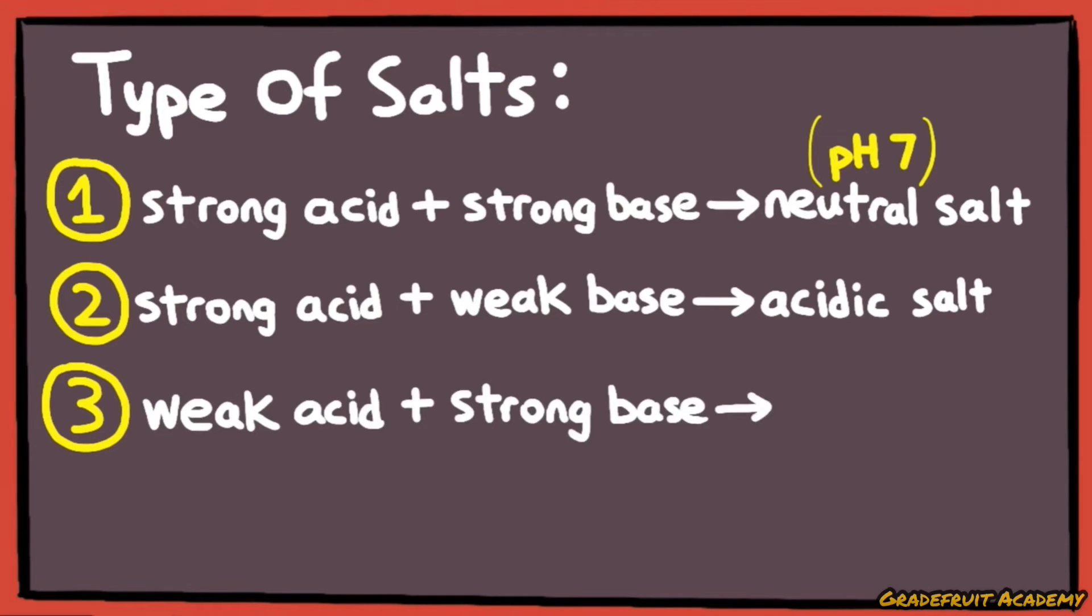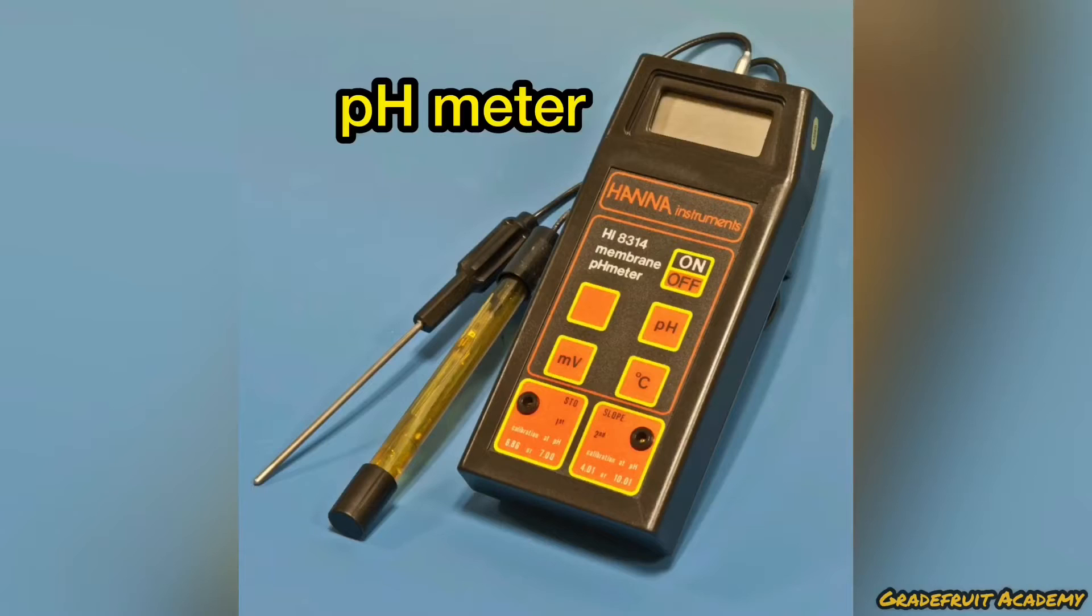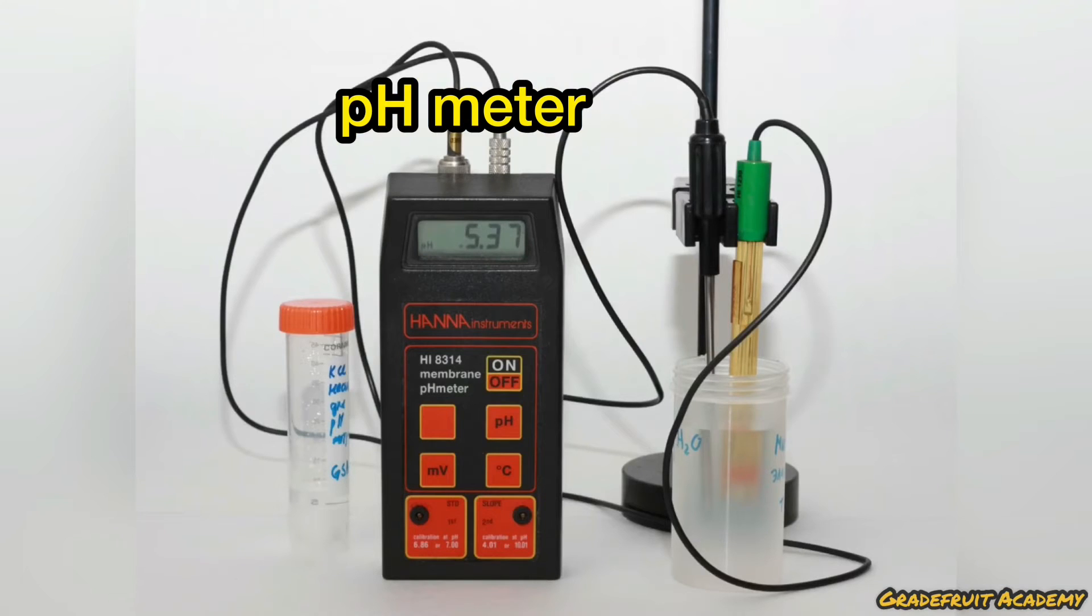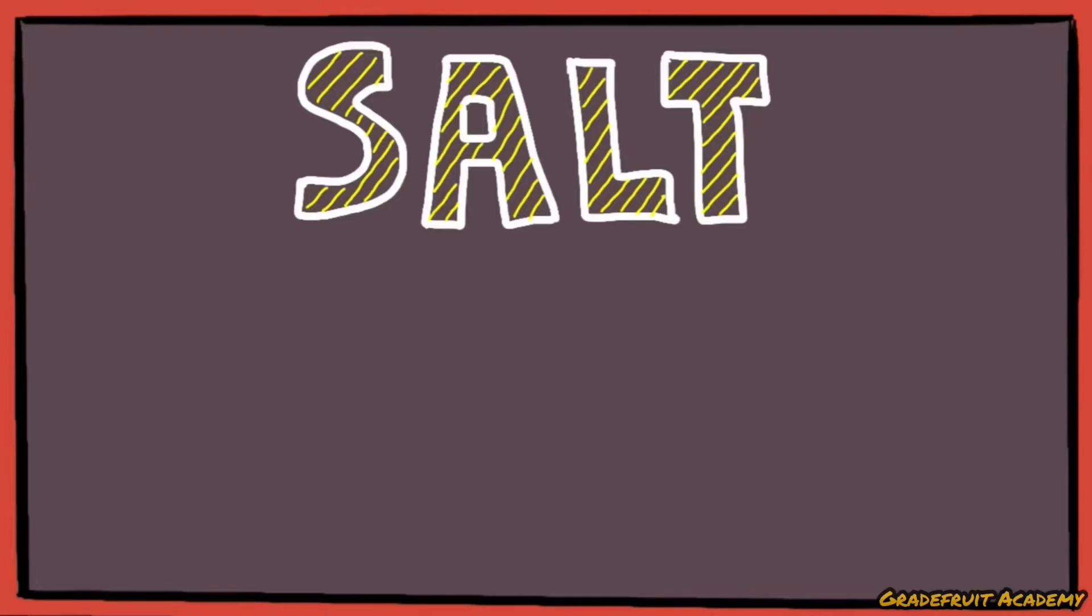between weak acid and a strong base, which gives an alkaline salt, and lastly, between a weak acid and a weak base, which we can't really tell, and we'll need a pH meter to help us out in determining the exact pH of the salt. The reason why some salts are acidic or alkaline can be explained by a process called salt hydrolysis.